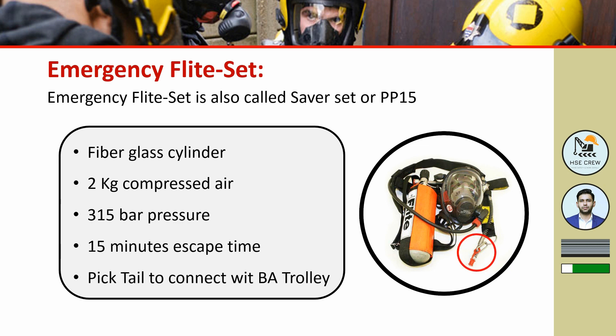The difference with the emergency flight set is that it is combined with the breathing airline (BA) trolley. It is connected to the BA trolley via a pigtail connection. In case of oxygen supply disruption — such as hose rupture or pressure loss — the flight set acts as a backup escape device.